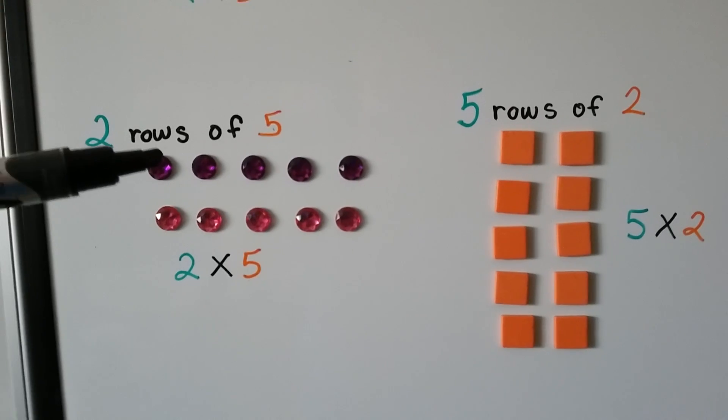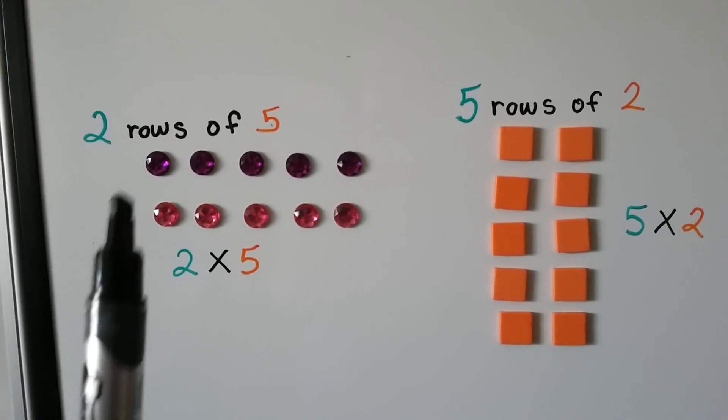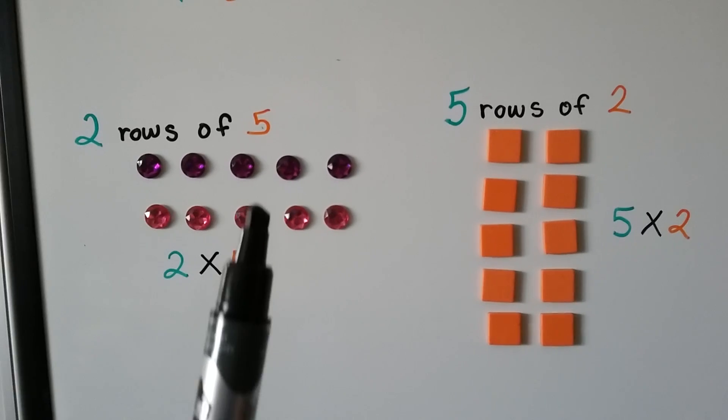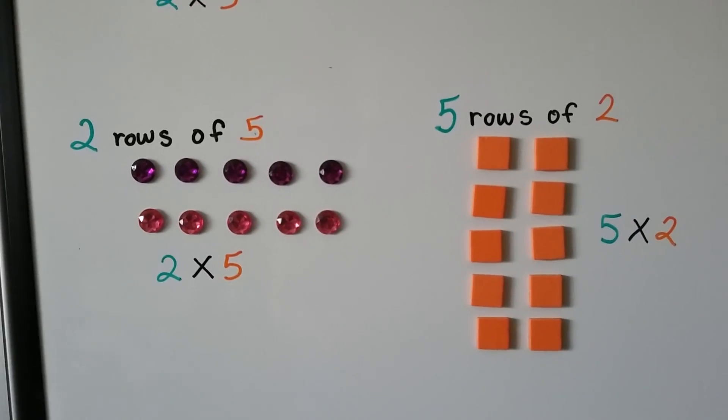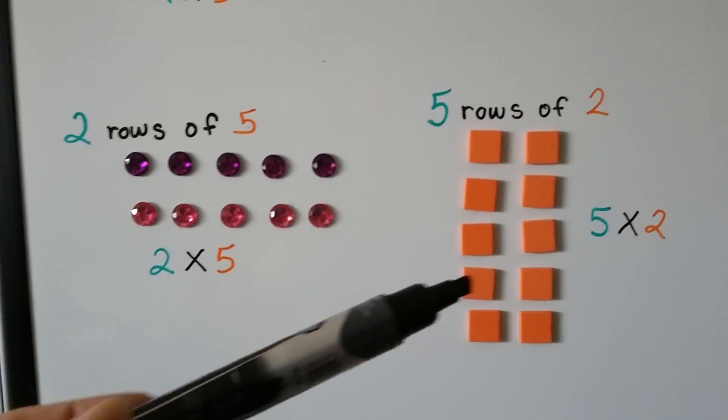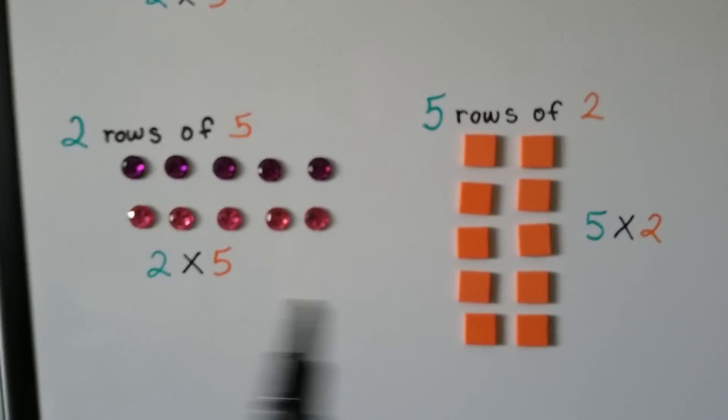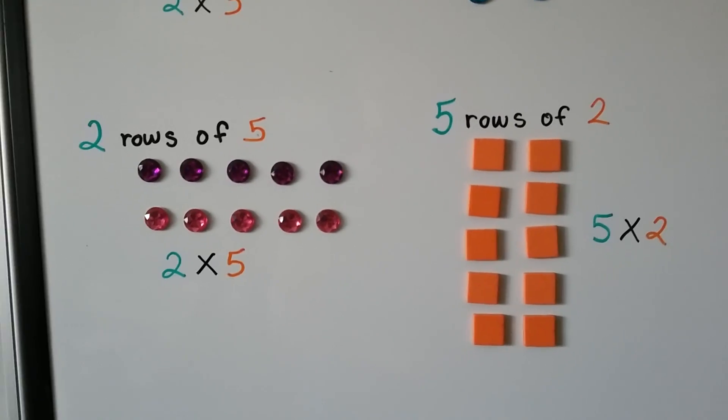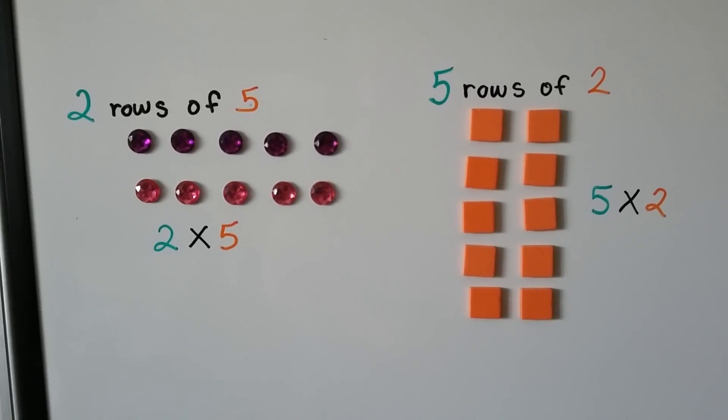Here we have 2 rows of 5. 2 rows, 1, 2, and 1, 2, 3, 4, 5 columns. And here we have 5 rows of 2. 1, 2, 3, 4, 5 rows, and 2 columns. 2 times 5 and 5 times 2. They're both 10.